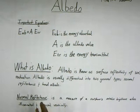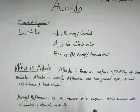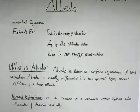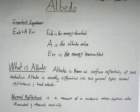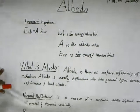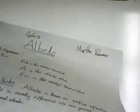So what is albedo? Albedo is known as the surface reflectivity of the sun's radiation. Albedo is usually differentiated into two general types: normal reflection and bond albedo. Normal reflection is a measure of the surface relative brightness when illuminated and observed vertically, while bond albedo is the fraction of the total incident solar radiation reflected by a planet back to space — it is the measure of the planet's energy balance.